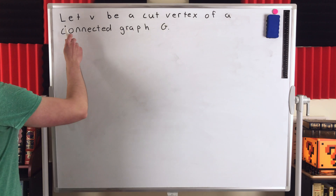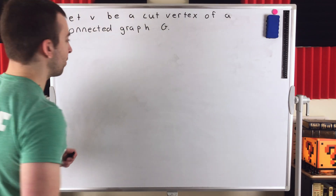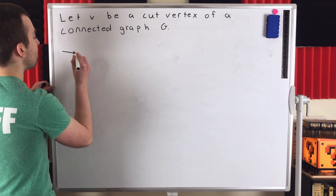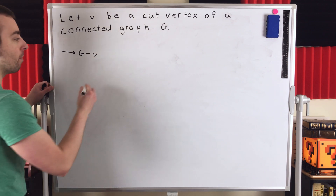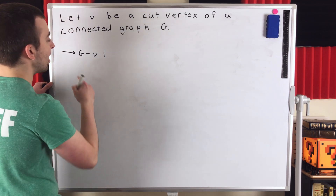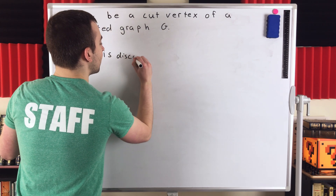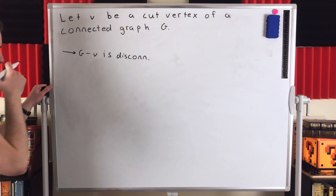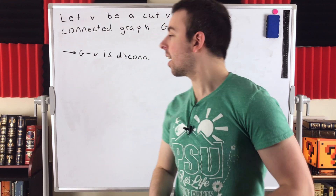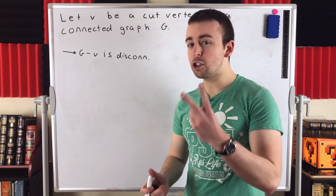Our first statement: let V be a cut vertex of a connected graph G. Since V is a cut vertex, then by definition, the graph G minus V — where we delete that cut vertex and its incident edges — is disconnected. So G minus V is disconnected, which means it has to have at least two components.